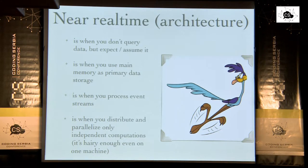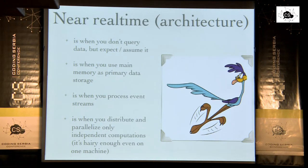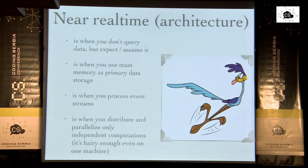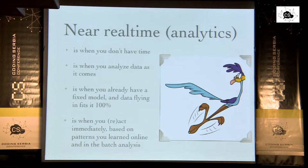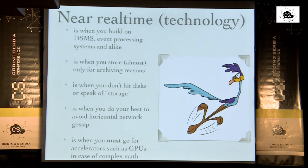Memory mutates into something absolutely important — you don't work with disks directly. You use memory as your storage. You are on event streams. Concerning distribution and parallelism — in such systems you distribute and parallelize only when you really have to. The ideal case is staying on one single machine. As soon as you go for distribution, this will start to hurt you in ways I'll explain.